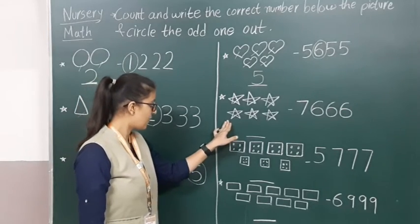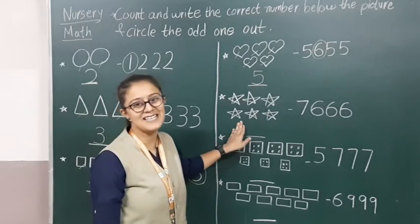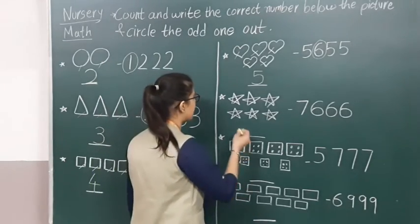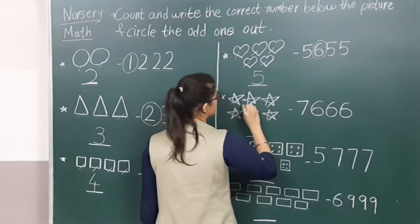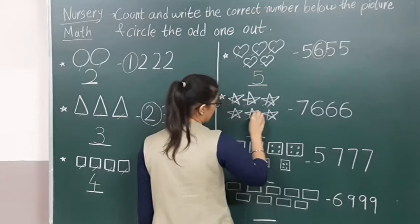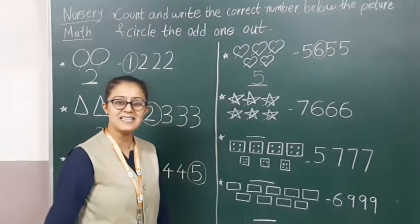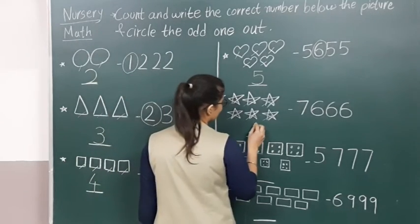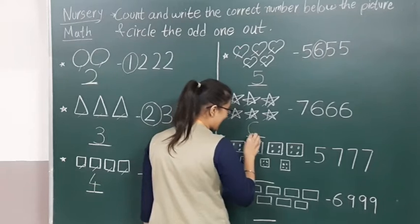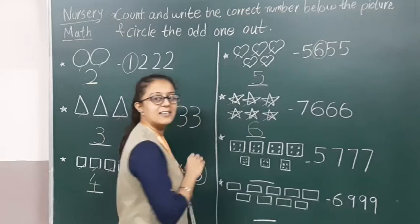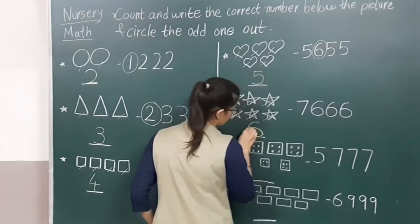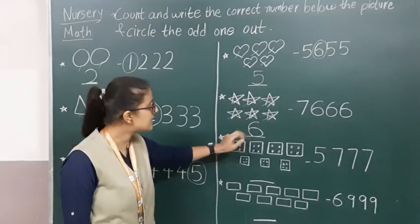Now moving to the next. What is this? This is a star, and there are many stars. So we have to count one by one: one, two, three, four, five, six — six stars. So we have to write here number 6. How to write number 6? One curve line that should touch the bottom line, then one big curve that should touch the bottom line, and one half curve that should touch the first curve. Number 6.